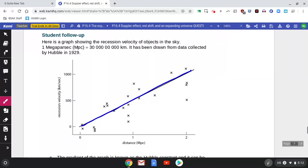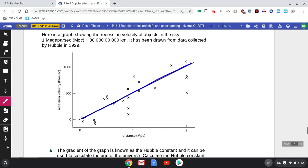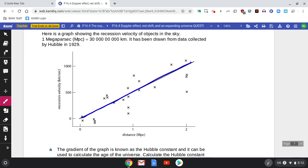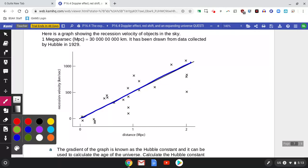Now last bit, it was asking about the gradient. How do you measure the gradient? So the gradient of this graph is called the Hubble constant, and that's really important. If we know the value of the Hubble constant, we know how quickly the universe is expanding.